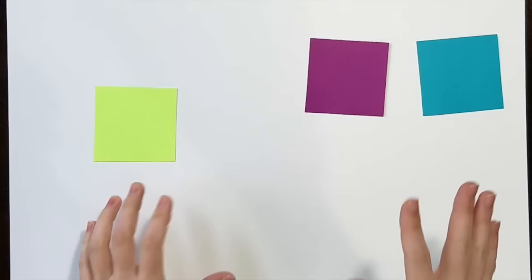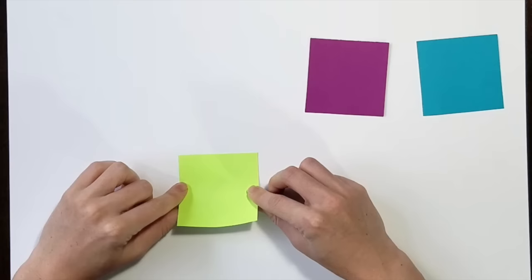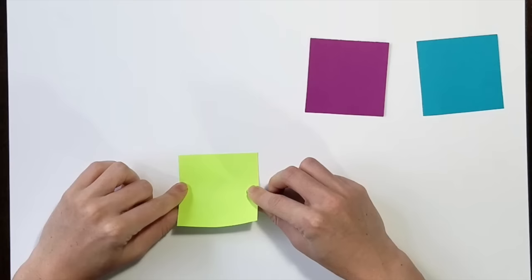So first I'm going to start with the easiest fold and that is the hat fold. I'm going to take my first piece of 3 inch by 3 inch paper and I'm going to use my fingers and fold it in half horizontally.